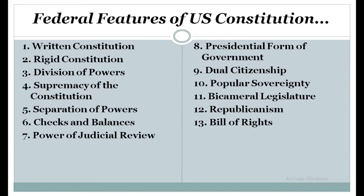Seven, there is the power of judicial review, which is in the hands of the Supreme Court. The Supreme Court has the power to interpret the Constitution in terms of legality or social relevance. Any law passed by the legislature or executive order issued by the President can be reviewed by the Supreme Court, and if found to go against the spirit of the Constitution, such laws or executive orders can be declared null and void. Eight, the United States has a presidential form of government. The President is not simply the head of state — all executive power lies with him.